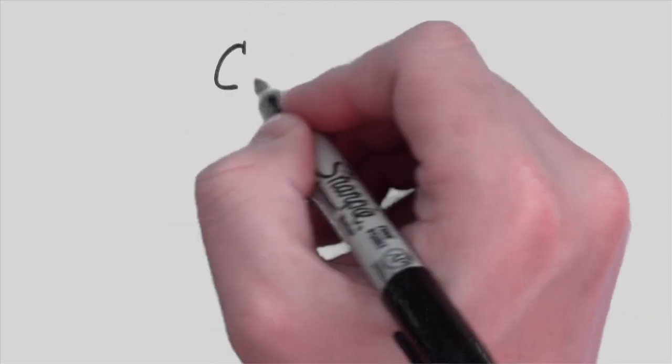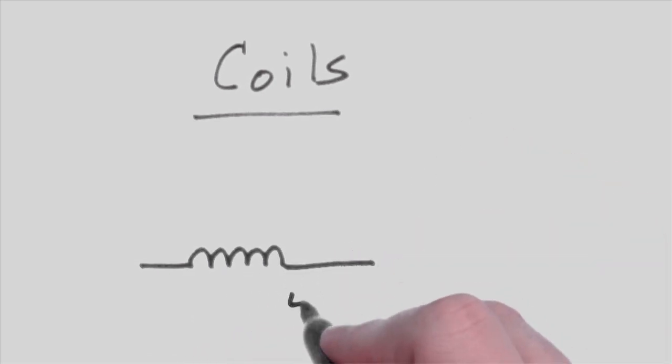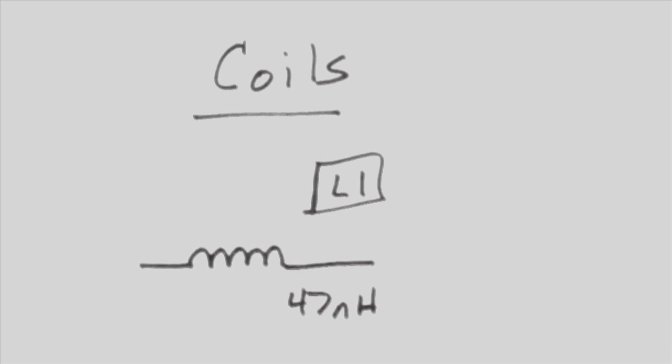When thinking of the symbol for a coil or inductor, think of a wire being wrapped around a core, and then you'll see how it relates to the symbol. The value is typically in henries, and the designator is the letter L.